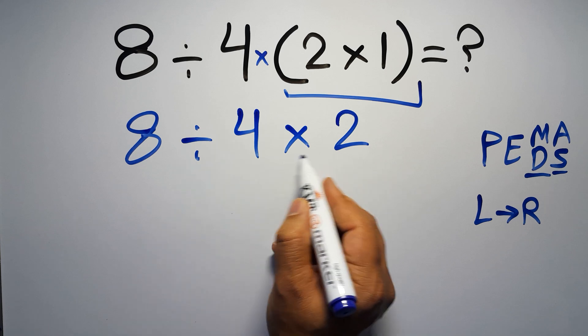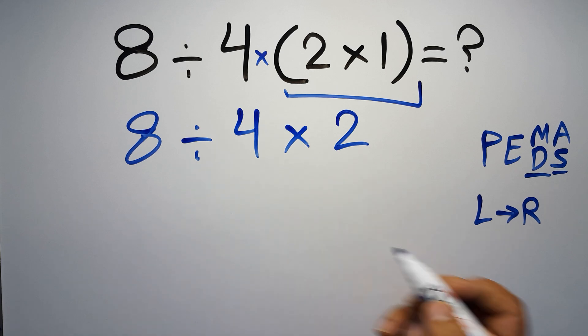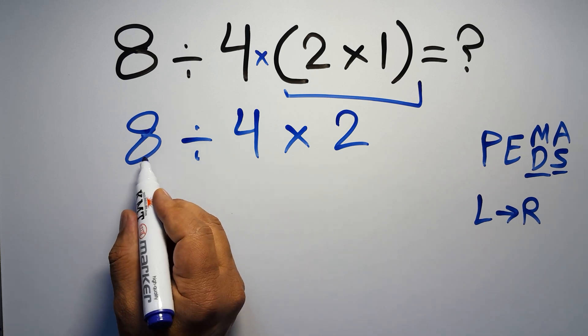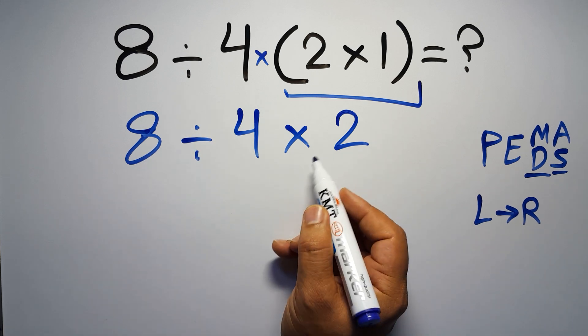Now we have one division and one multiplication. As I said, multiplication and division have equal priority, and we have to work from left to right. So here, first we have to do this division, then this multiplication.